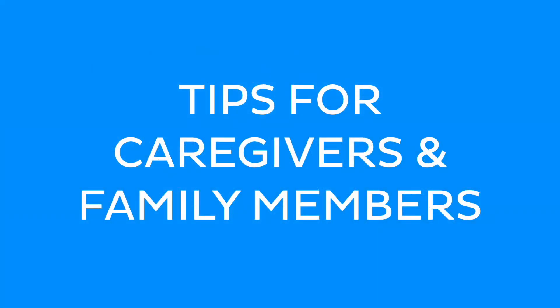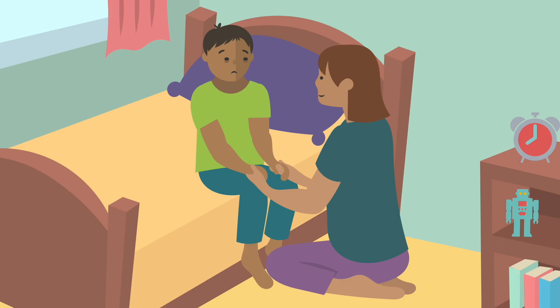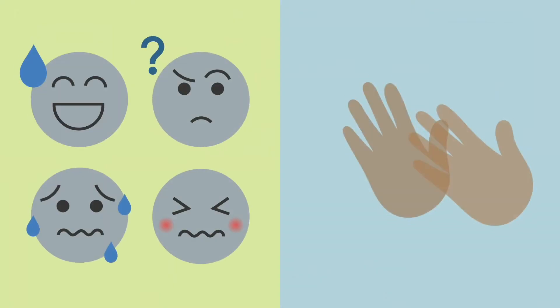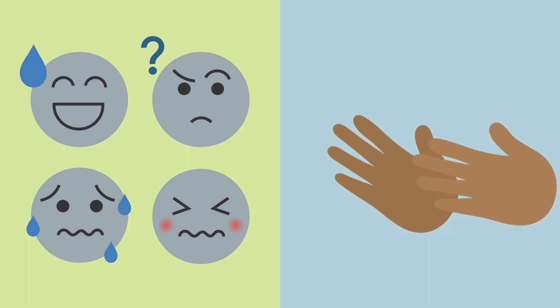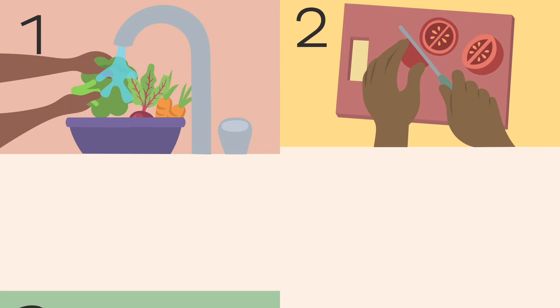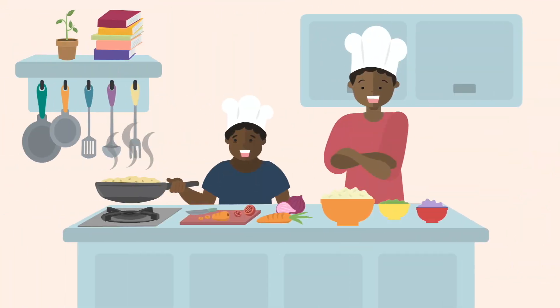When caring for a person with Down syndrome, communication and patience are key. Use simple, easy-to-understand language and give them time to process what you're saying. Encourage them to share their thoughts and feelings and really listen. Be mindful of facial expressions and gestures too. If you're helping them learn a new skill, break it down into smaller steps, show them how it's done, and use visual aids if needed — this way they'll become more independent and confident.